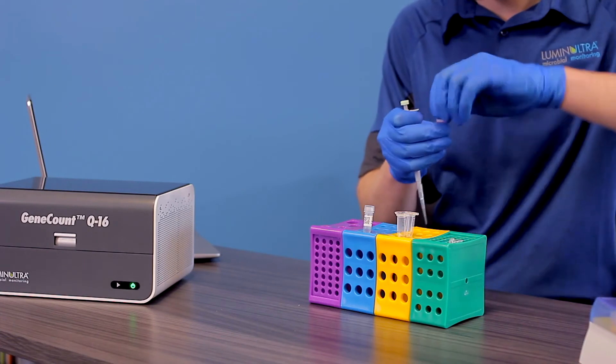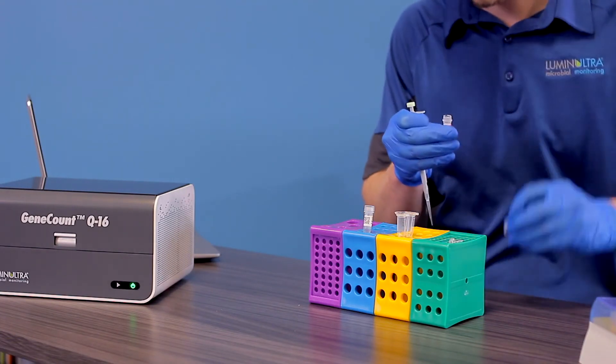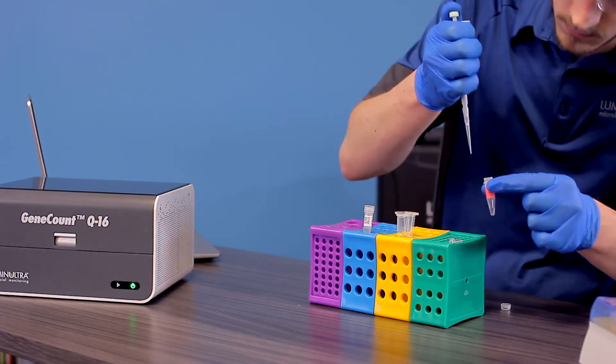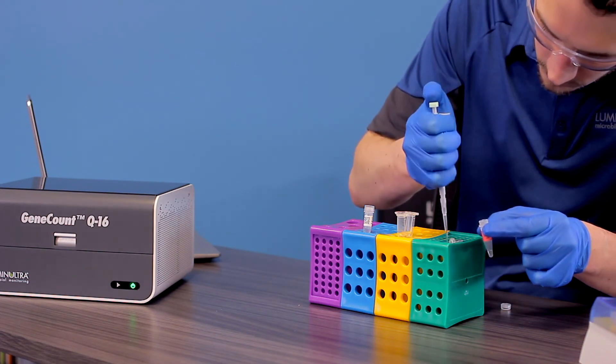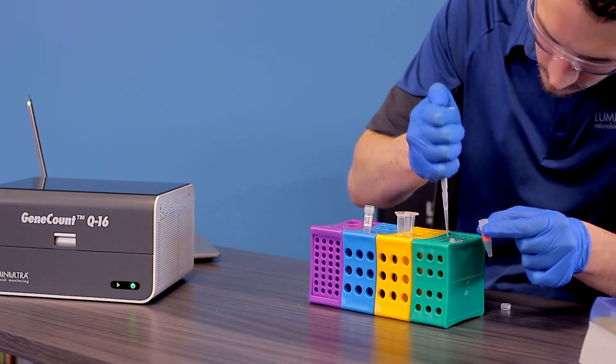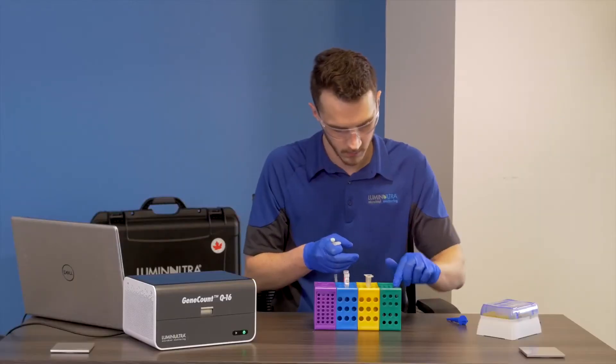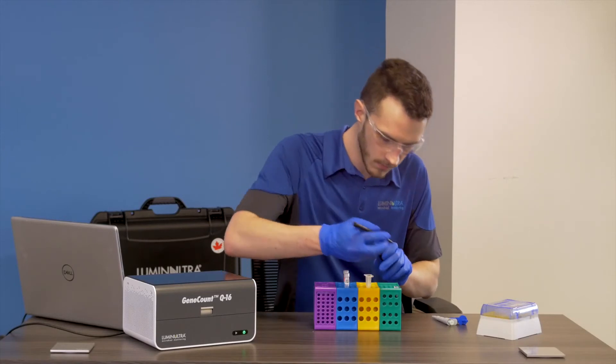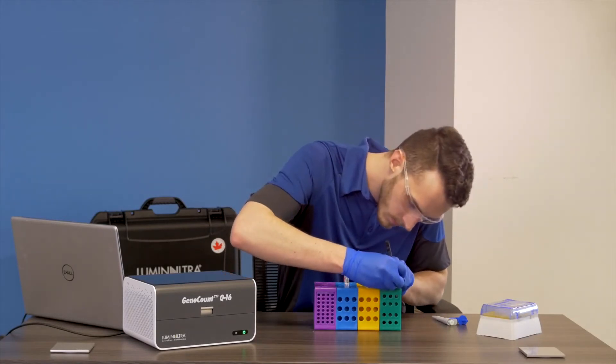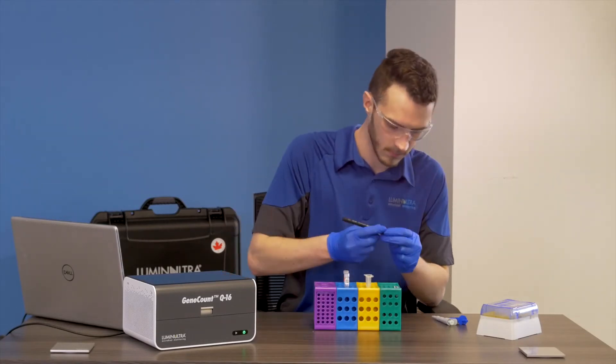With a new pipette tip, transfer 20 microliters of the rehydrated positive controlled DNA into the fourth qPCR reagent tube. Recap both tubes and label your positive control. Please note that the positive controlled DNA is highly concentrated, so care must be taken not to contaminate other samples with the positive controlled DNA to prevent inaccurate results.